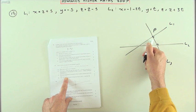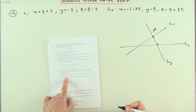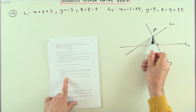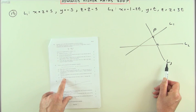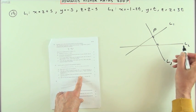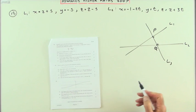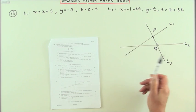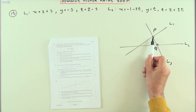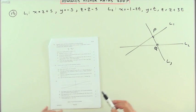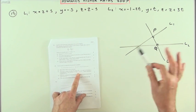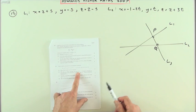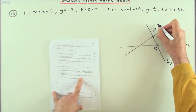Knowing where point P is, or being able to find it, is crucial to finding the shortest distance. Nevertheless, find the equation of line 3, then find its intersection with line 2, call that Q, and PQ is the shortest distance. Well, it would be if you knew how to find P — but yours is not to reason why, just do the question. So P is the point (1, 1, 3).